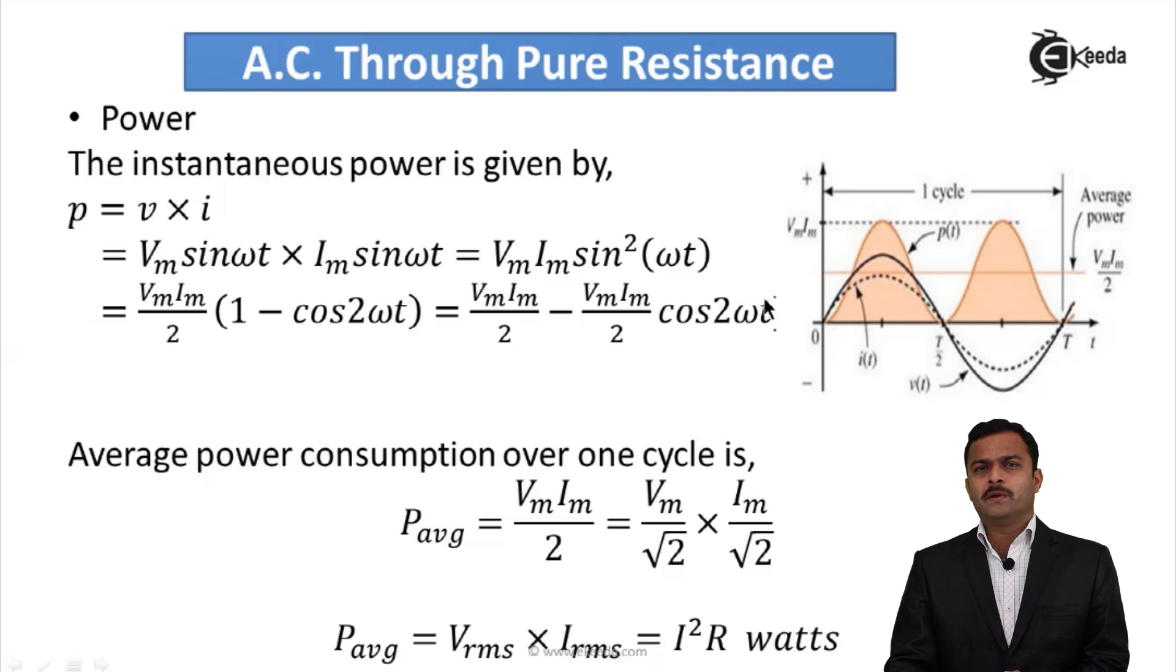If you closely observe this, you will come to know that out of these two components, one component is a DC of a fixed value VmIm/2, and another component is a sinusoidal. What happens is the sinusoidal is present and that sinusoid has shifted by some amount, and that shift is nothing but VmIm/2.